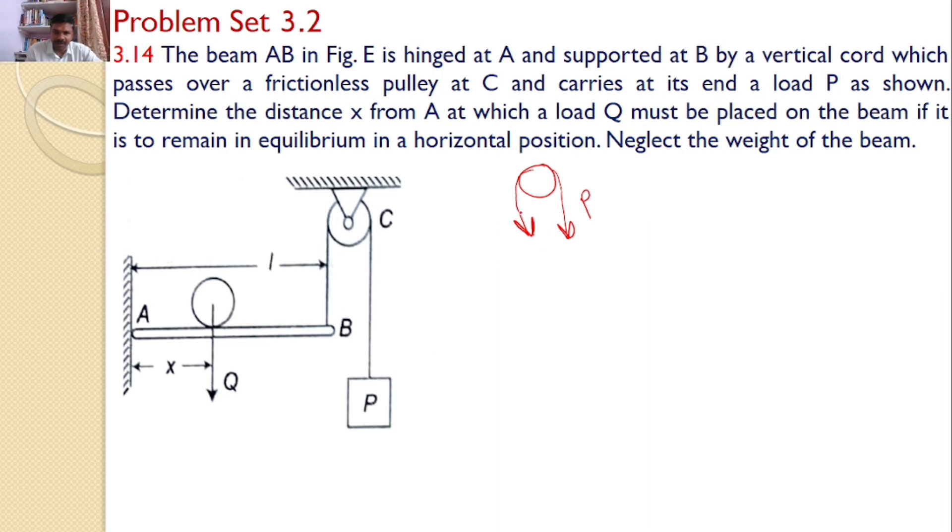To satisfy the equilibrium, this side, the force must be P. That means the force in this cord equals P. When you are looking from point B, then this force is also equal to P.